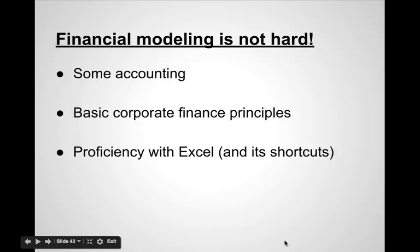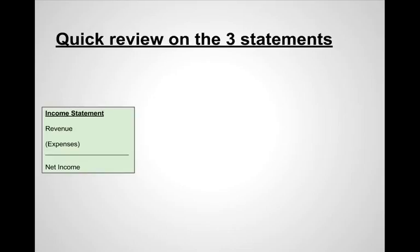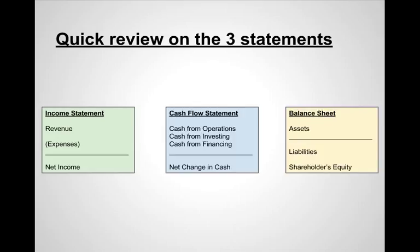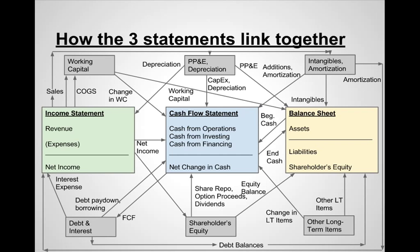In our last video we were going to jump into a quick refresher on how the three statements are actually going to link together in our particular model. We've got the income statement, the cash flow statement, and the balance sheet — these are the three statements, and they link together. It looks complicated but once we go through the exercise of peeling back each of these connections, everything will make a lot more sense.